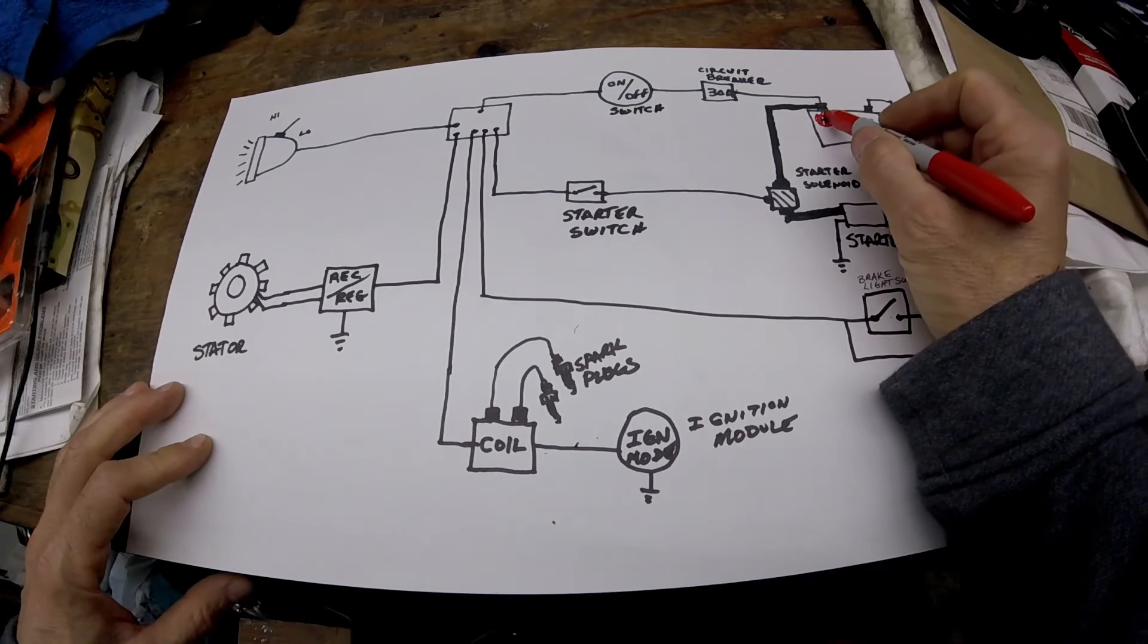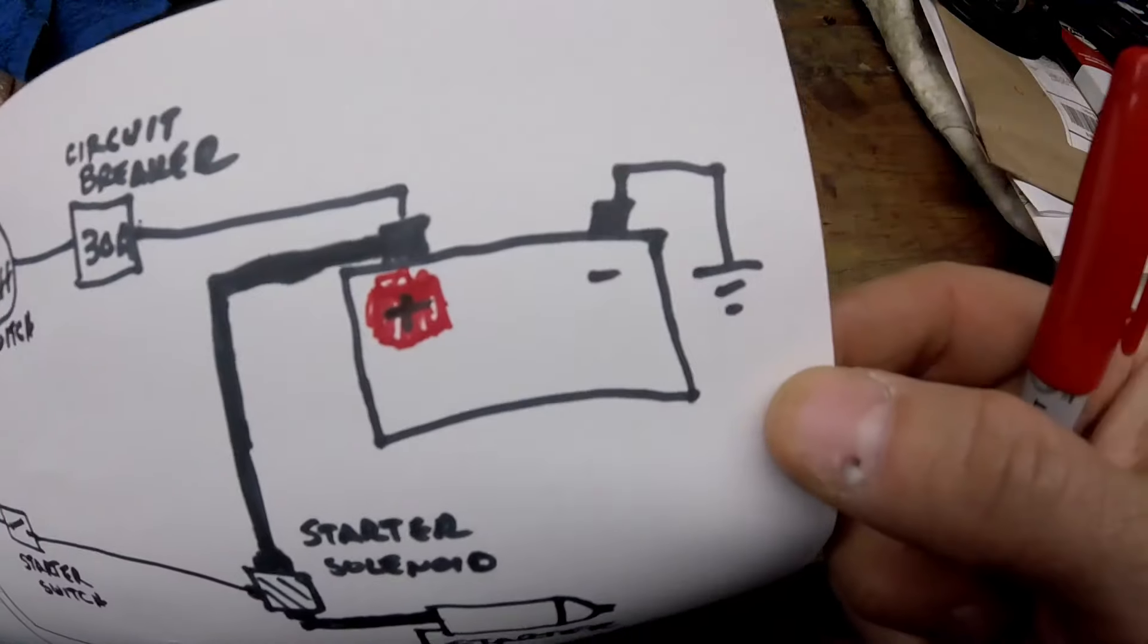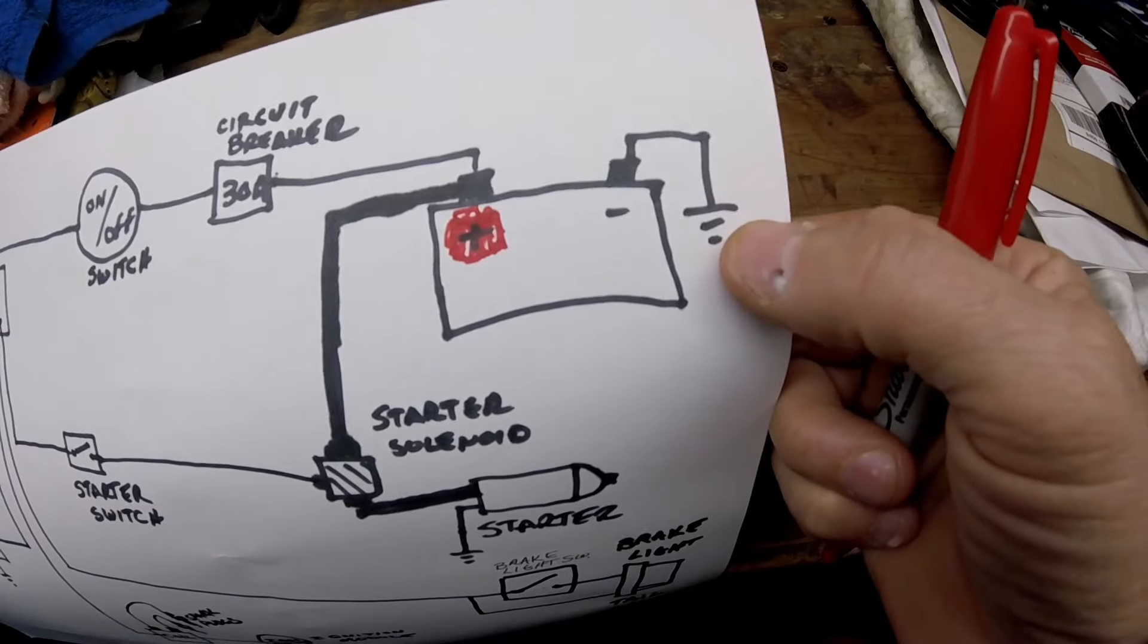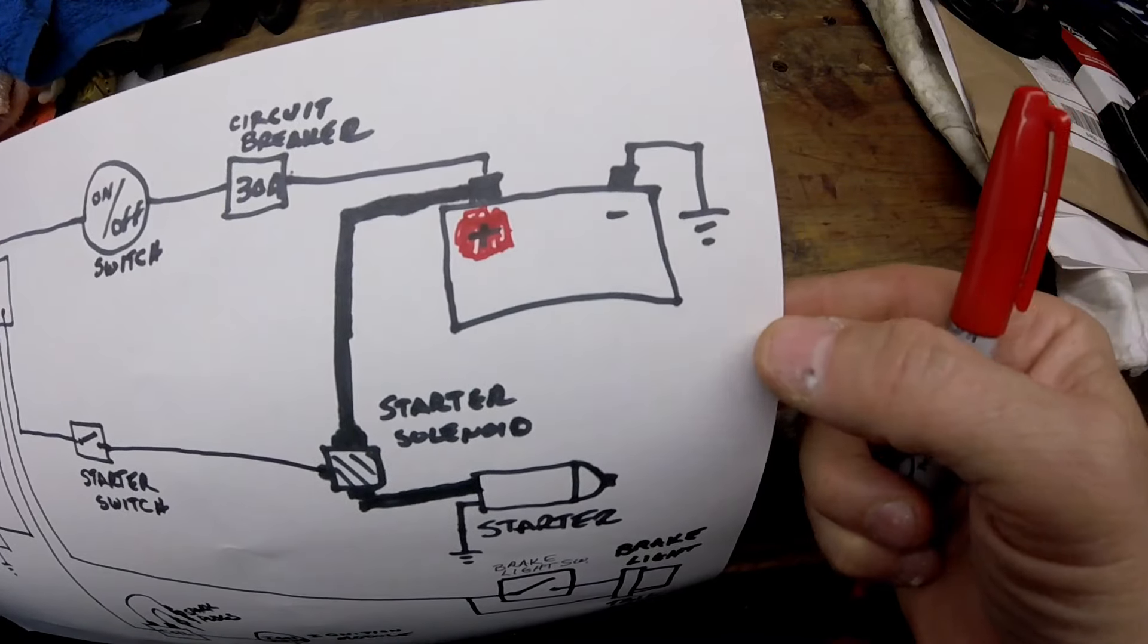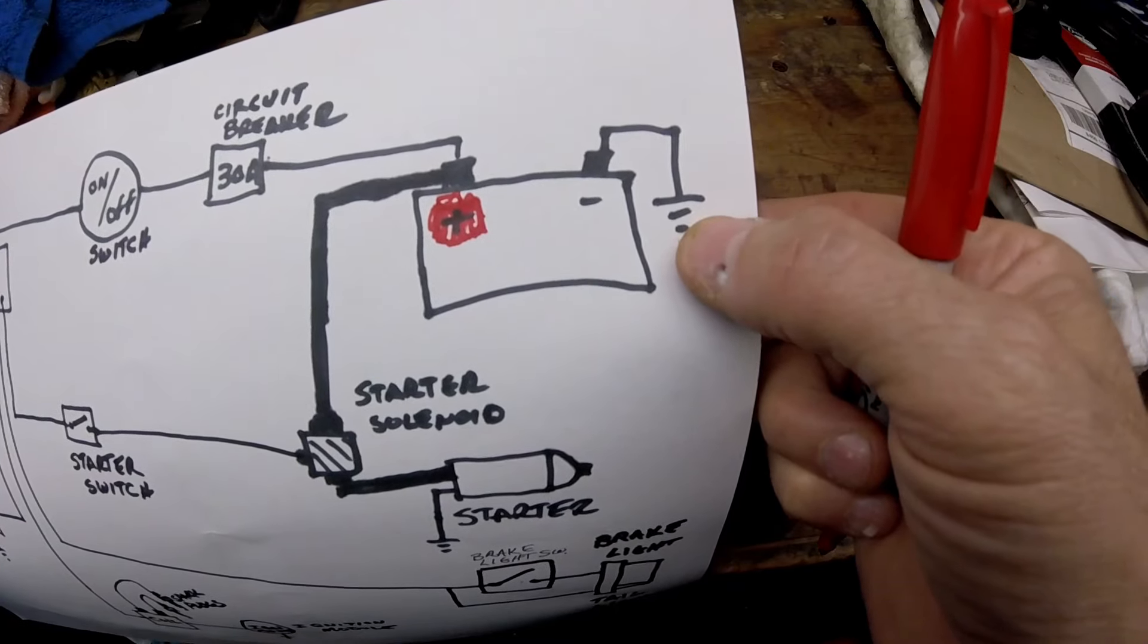We'll start over here at the battery. This is the battery positive. I want to show one thing. This designation equals a common ground. That's the negative side of battery. And that's basically on a motorcycle going to be the frame.